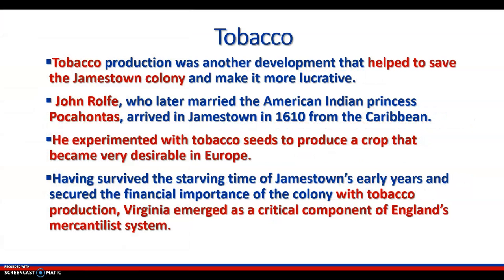Tobacco was huge in the Jamestown colony. Tobacco production was another development that helped to save the Jamestown colony and make it more lucrative. John Rolfe, who later married the American Indian princess Pocahontas, arrived in Jamestown in 1610 from the Caribbean. He experimented with tobacco seeds to produce a crop that became very desirable in Europe. Having survived the starving time and secured the financial importance of the colony with tobacco production, Virginia emerged as a critical component of England's mercantilist system, making England a lot of money.